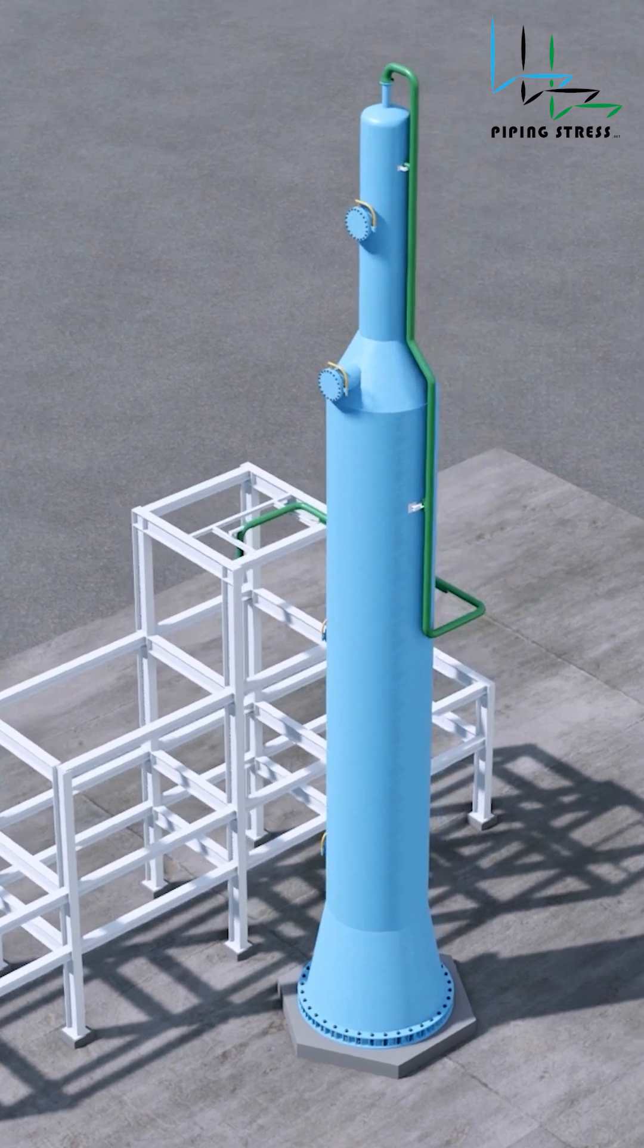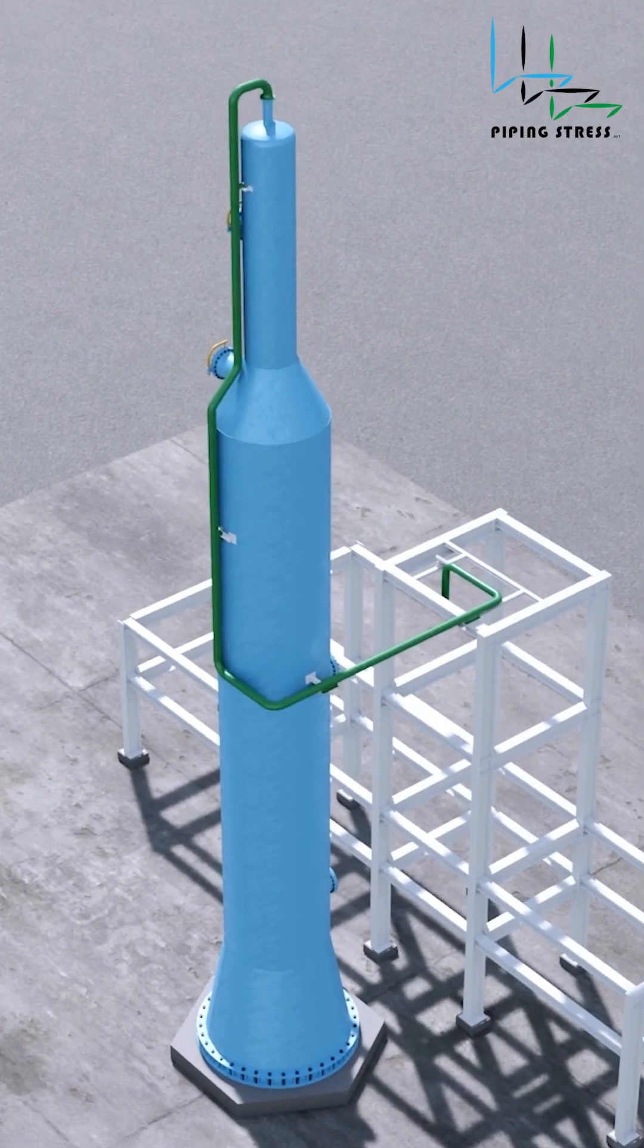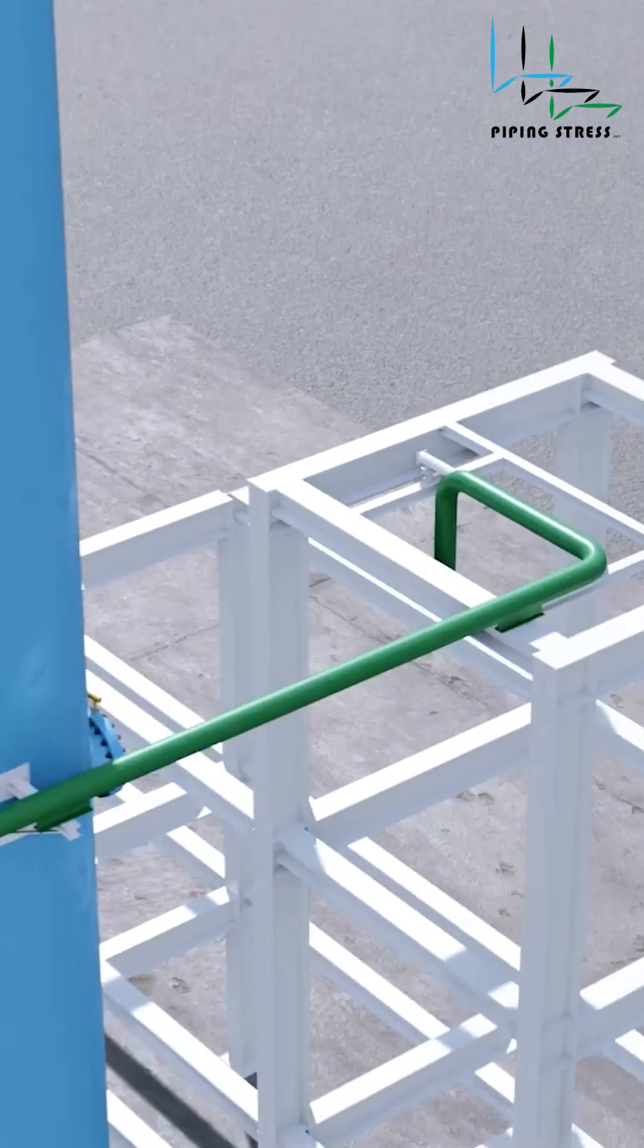A pipe runs down from the top nozzle of an elevated pressure vessel, guided by restraints. Then, it is supported by rigid supports on a horizontal leg.